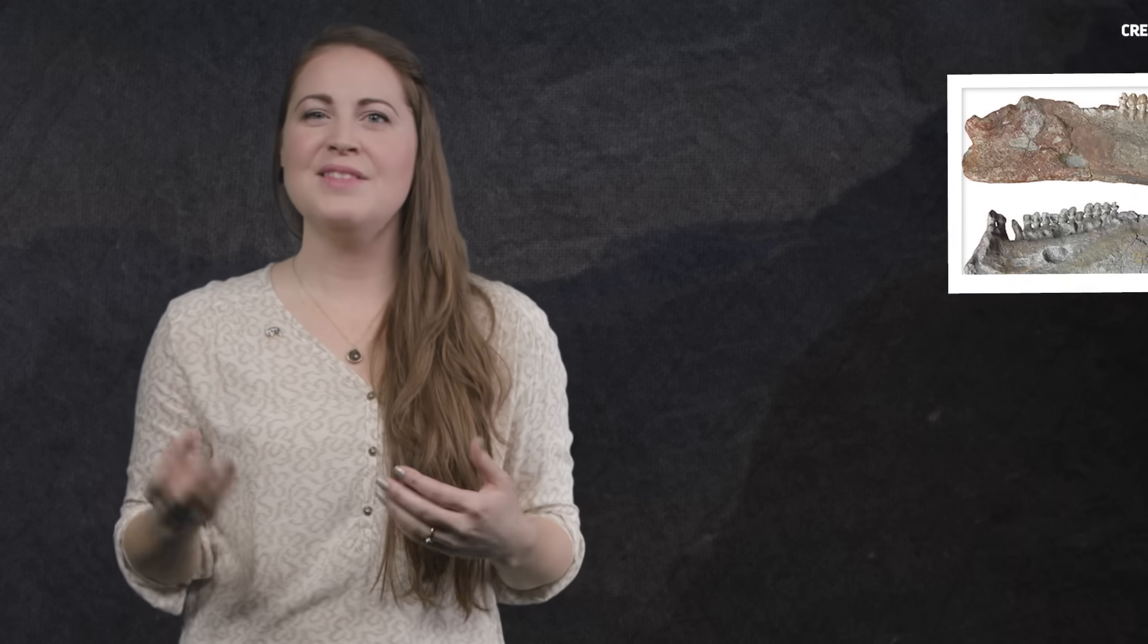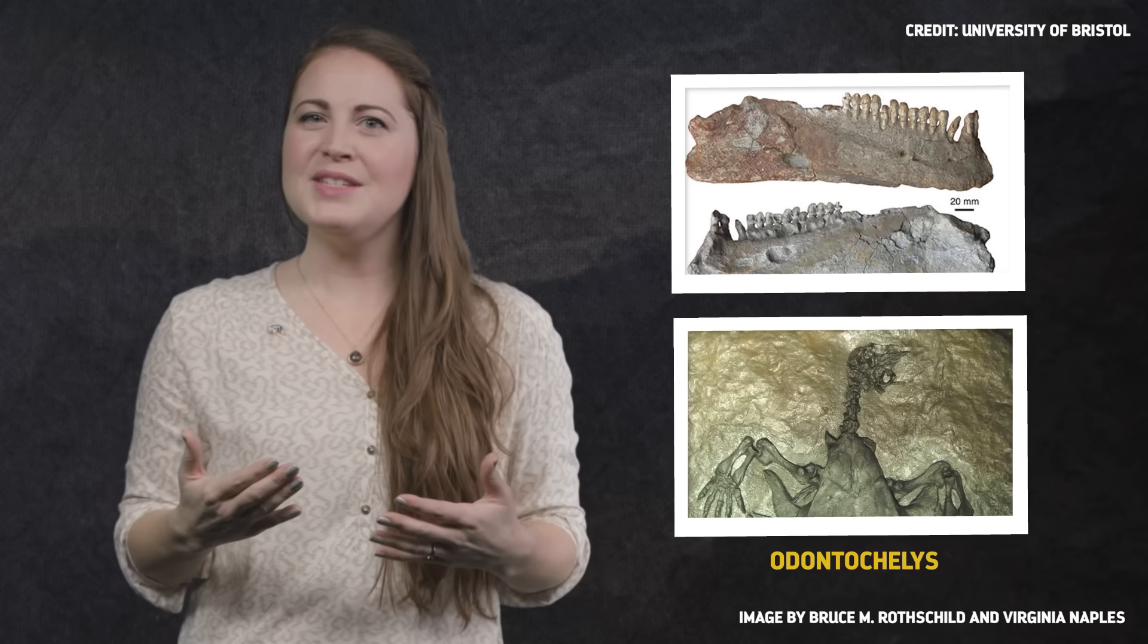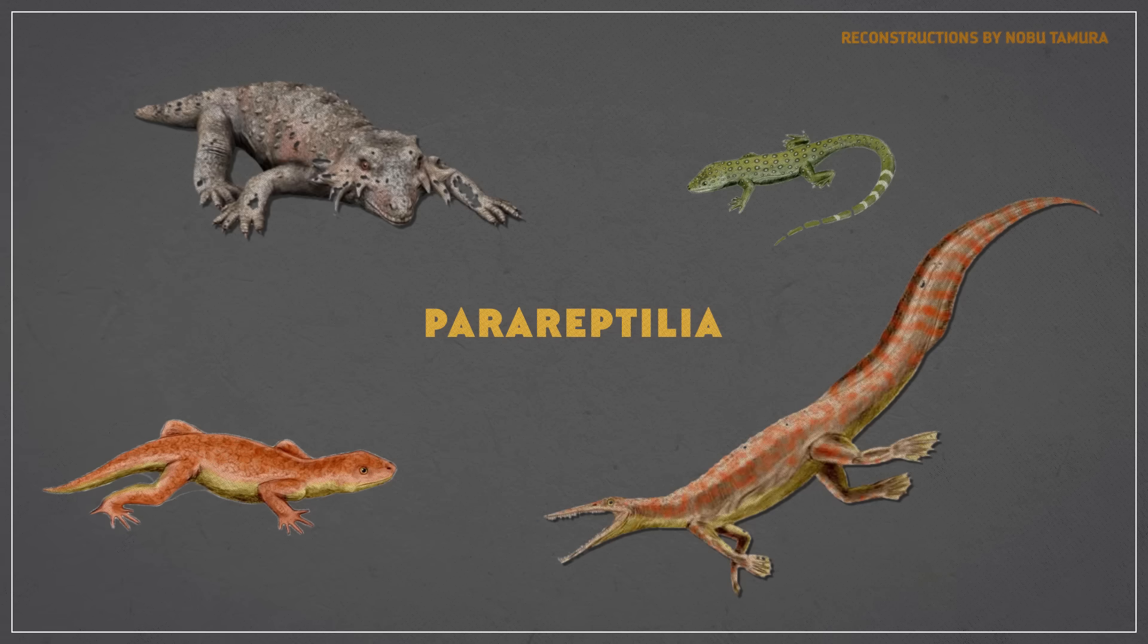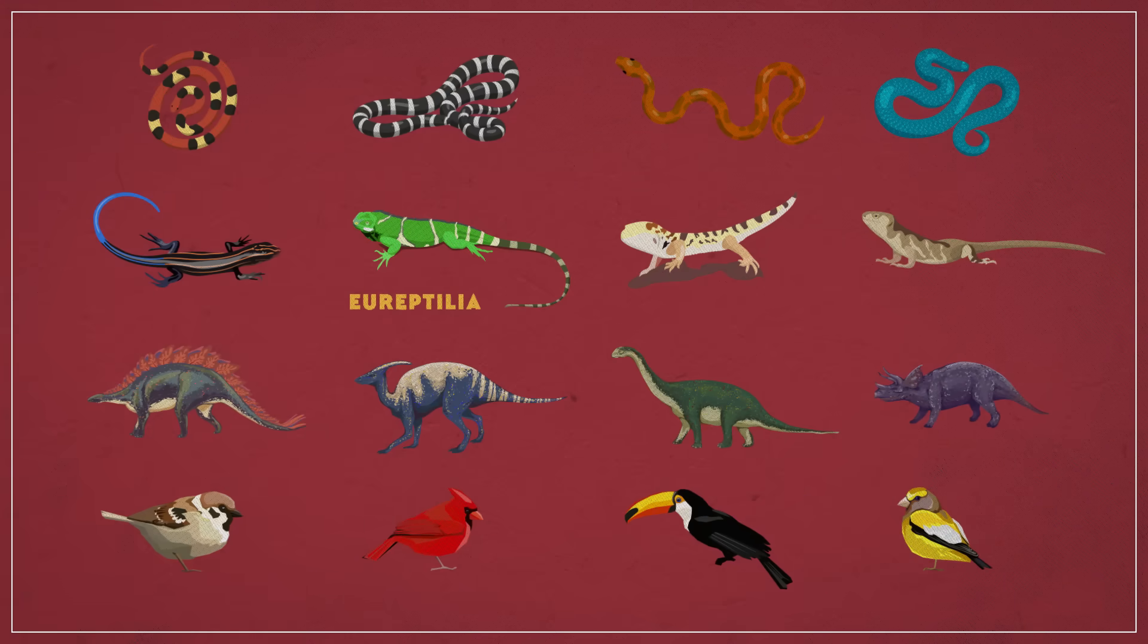But there was more. Unlike all other known turtles, Odontochelys had teeth. Its name actually means toothed turtle. And those teeth looked nothing like pareiasaur teeth. Pareiasaurs had teeth with lots of little cusps on them, like human molars. But this turtle's teeth were more like pigs. So it looked like this ancient turtle didn't belong in the parareptile group. It was a eureptile.